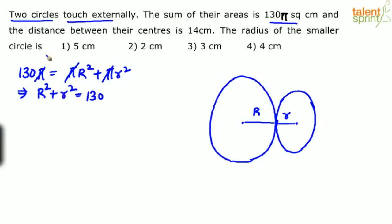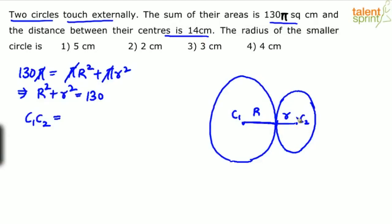What else do we know? The distance between the centers is 14 centimeters. Let's say this is center C1 and the center of the second circle is C2. The distance C1 to C2 is 14 centimeters. If you observe, C1C2 is nothing but the sum of the two radii — capital R plus small r — which gives you the distance, equal to 14.